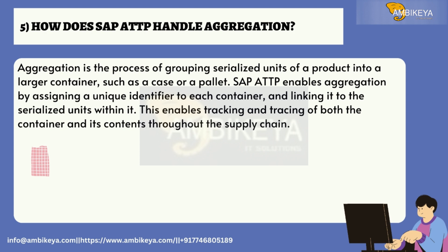Question number five: how does SAP ATTP handle aggregation? Aggregation is the process of grouping serialized units of a product into a larger container, such as a case or a pallet. SAP ATTP enables aggregation by assigning a unique identifier to each container and linking it to the serialized units within it. This enables tracking and tracing of both the container and its contents throughout the supply chain.